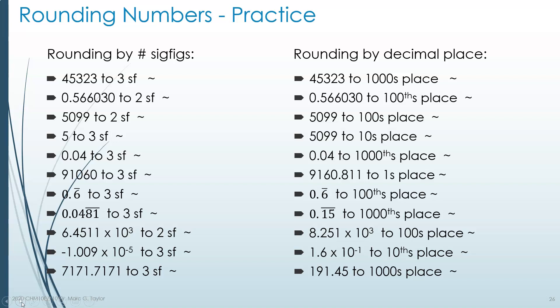Here are many different examples. The first column is if you were asked to round to a certain number of significant digits, and the second column is if you were asked to round to a specific decimal place. First example: 43,325 to 3 significant digits. We keep the 4, we keep the 5, and the first 3 is our last significant digit — the third one. Therefore, 2 is the number we look at to decide what to do with the 3. Since 2 is between 0 and 4, the 453 portion stays as 453, and the 3 does not change. We fill the remaining two places with zeros, giving 45,300.